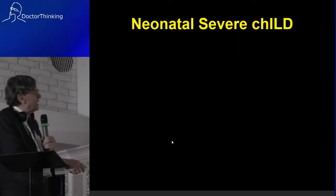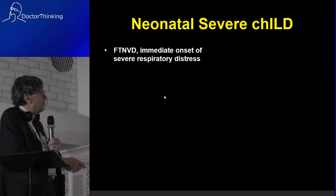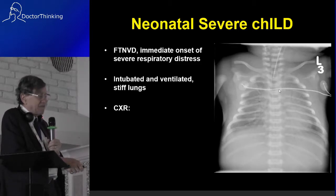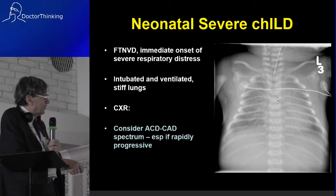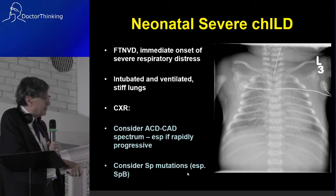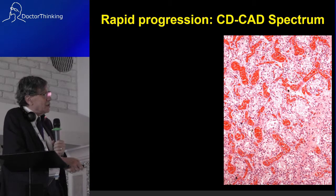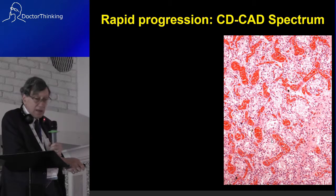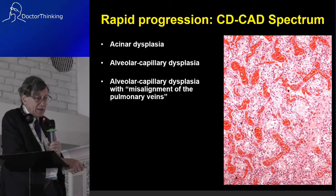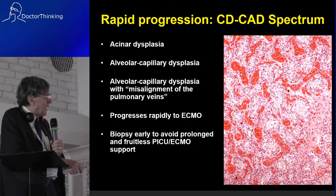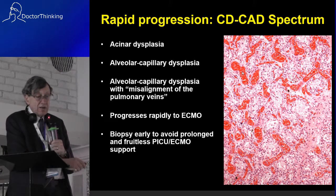Neonatal severe interstitial lung disease: typically full-term, with immediate onset of respiratory distress, ventilated with stiff lungs, and diffuse ground glass shadowing on chest x-ray. You need to consider the alveolar capillary dysplasia spectrum, particularly if rapidly progressive, and also surfactant protein mutations. On biopsy you can see the capillaries full of red cells with very little airspace — acinar dysplasia, alveolar capillary dysplasia, and misaligned pulmonary veins. These children progress rapidly to ECMO and we biopsy them early to avoid a long and fruitless ICU course.